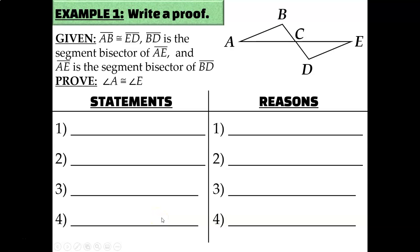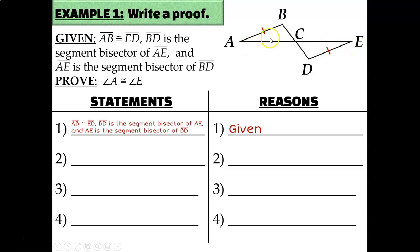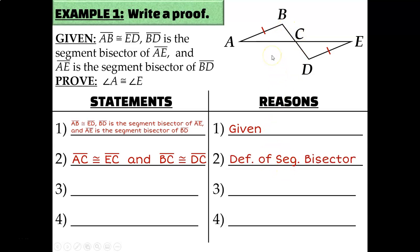Let's use this concept to write some proofs. We have a lengthy given: AB is congruent to ED; BD is the segment bisector of AE; and AE is the segment bisector of BD. I can label that AB is congruent to ED. The segment bisector parts lead to the next steps — segment bisectors cut segments into two congruent segments. So BD bisecting AE means AE is cut into two congruent segments, and AE bisecting BD means BD is cut into two congruent segments — by the definition of segment bisector. Now I see all three pairs of sides on these two triangles are marked congruent.